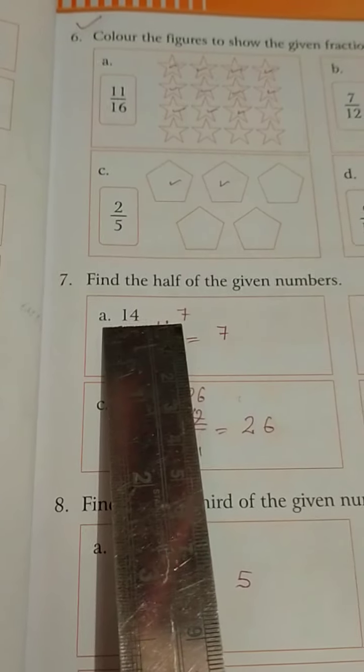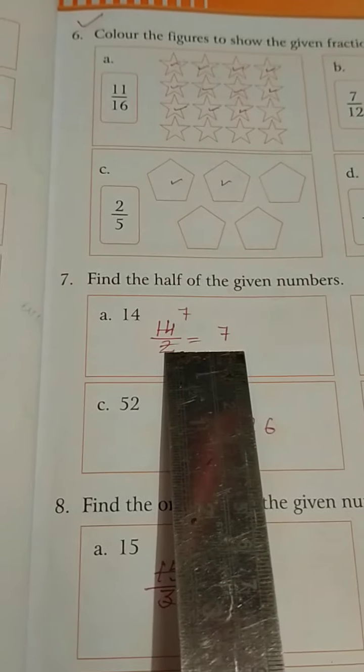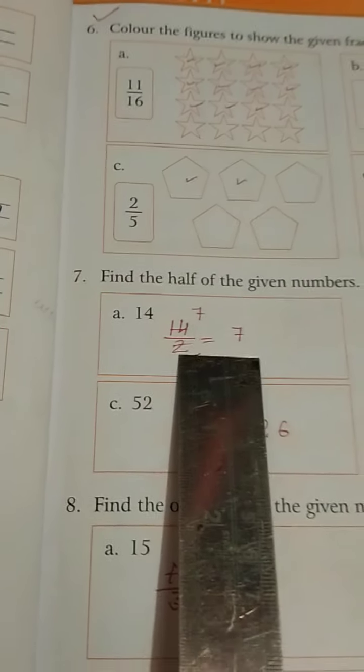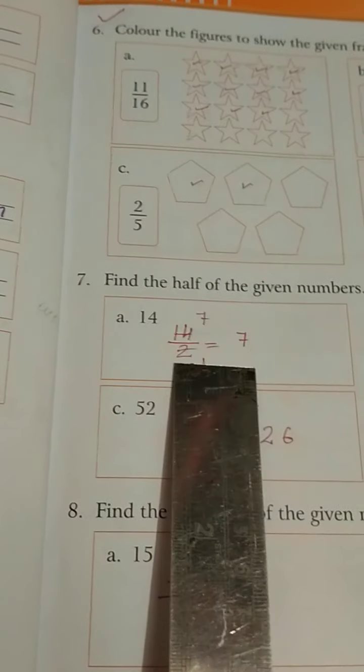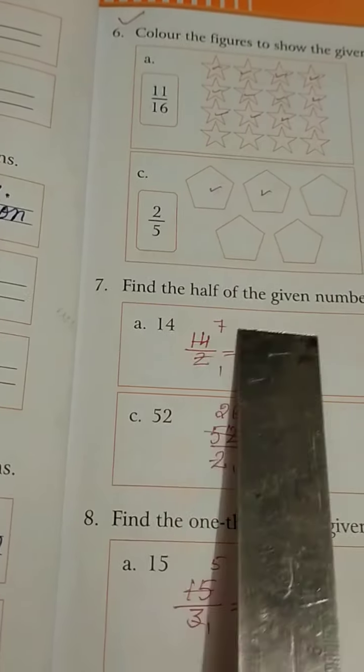For 14 we have to find the half of 14. Half of 14 means 14 divided by 2, so with a common number we have to cut these two numerators and denominator. 14 by 2 means 2, 7 or 14, so 7 is the half of 14.